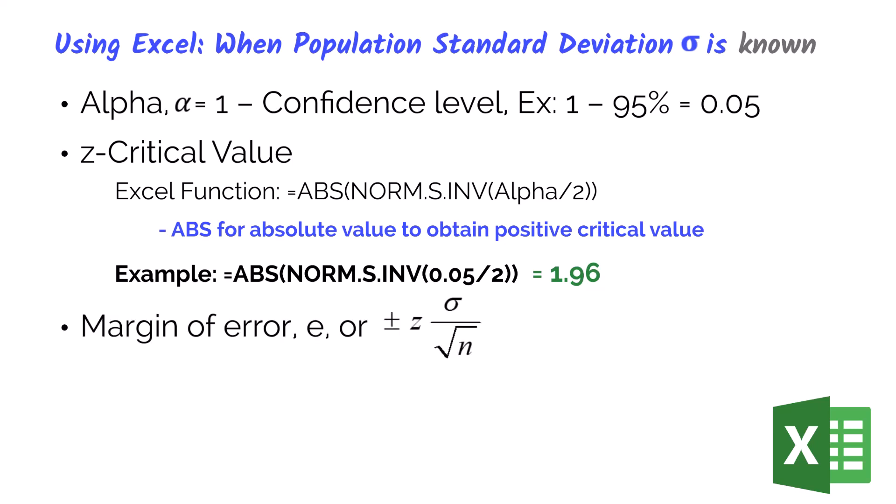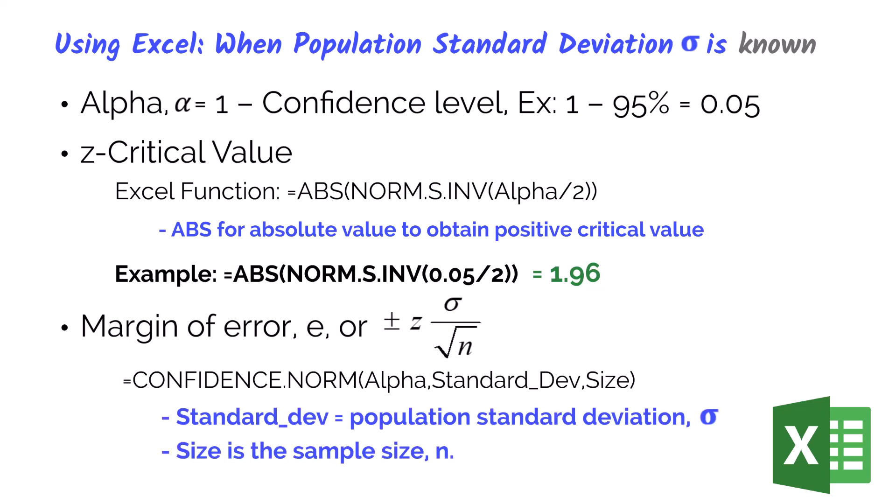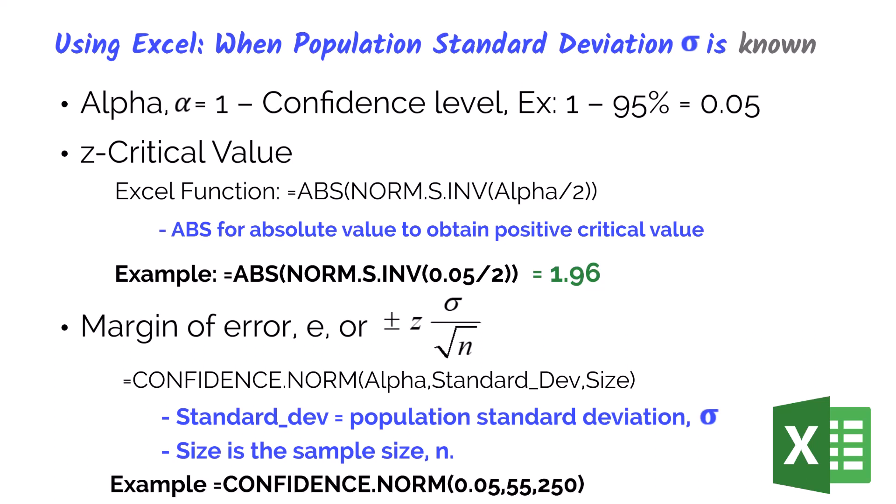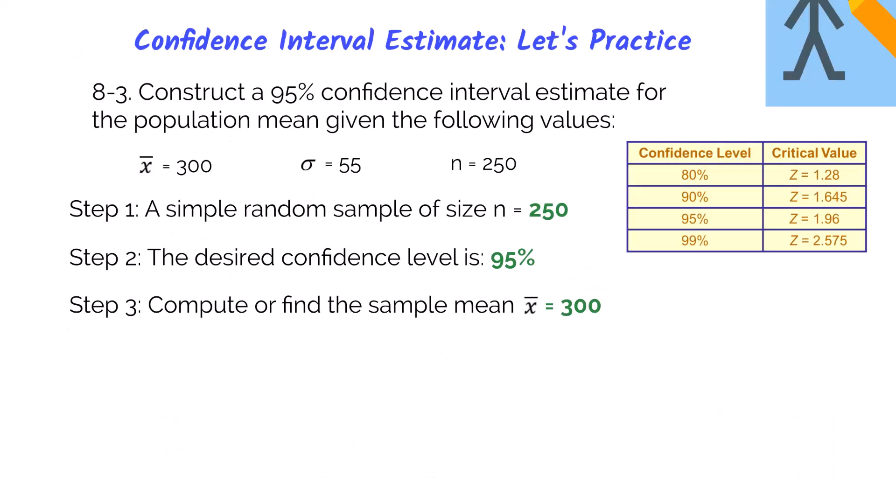For our margin of error, rather than doing it by hand, you can use Excel with alpha, the standard deviation, and the sample size as inputs. For example, with a confidence level of 95%, a standard deviation of 55, and a sample size of 250, plugging in the values gives a margin of error of 6.82. Now let's wrap this up with a practice problem.